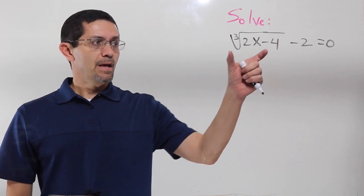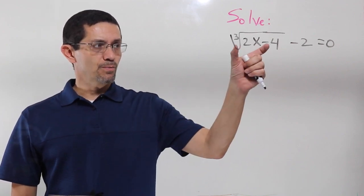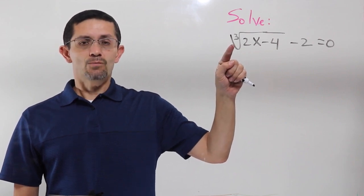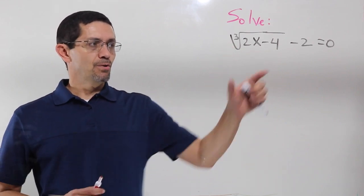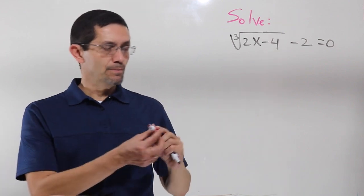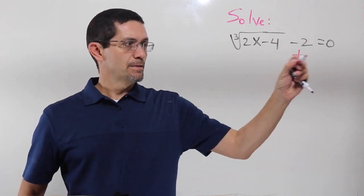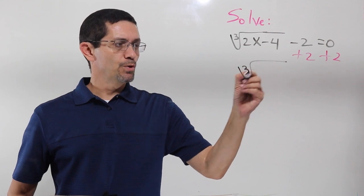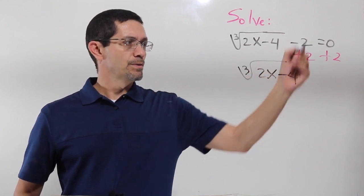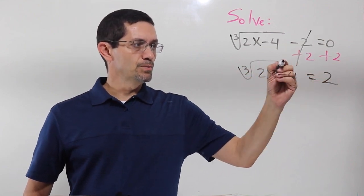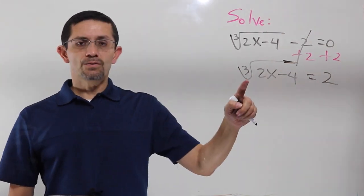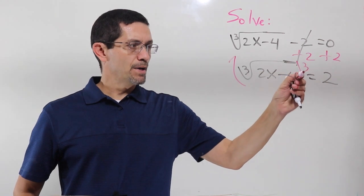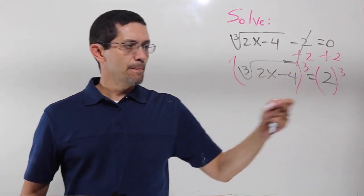The first thing we're going to solve is having only one radical. So we only have one radical. That means we have to leave it by itself before we can get rid of the radical. There's a minus 2, so first thing is plus 2, plus 2. Then I'll have cubic root of 2x minus 4 equals 2. To get rid of the cube root, I have to raise both sides by the same index.